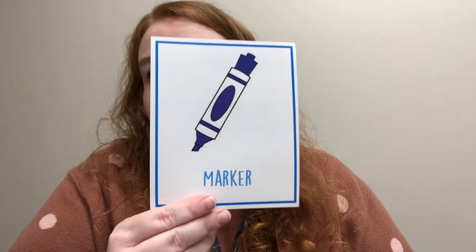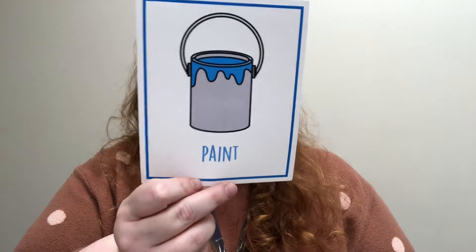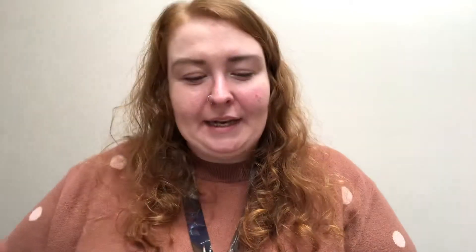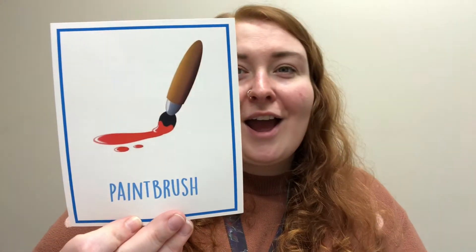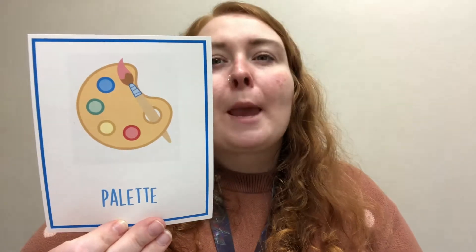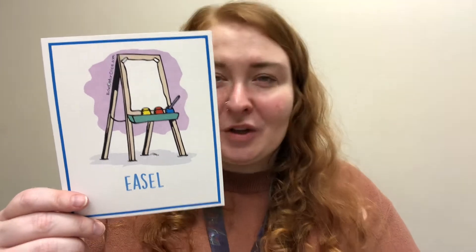What is that one? A marker. Good. And that? Paint — it's a bucket of paint. And we use this one to paint: a paintbrush. Good. And this one is one of our tricky ones — it's a paint palette. We have these in our classrooms to paint on — they're called easels.